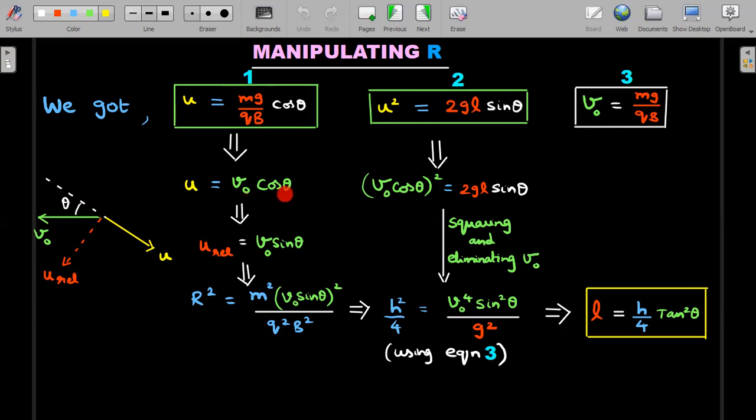Therefore u, which is the velocity just by leaving the inclined plane in ground frame, is coming out to be v naught cos theta in manipulation. How do you calculate the u relative? The actual velocity with respect to ground is towards this direction. The frame is moving towards right, so in his frame he will see relative velocity by subtracting that v naught from u.